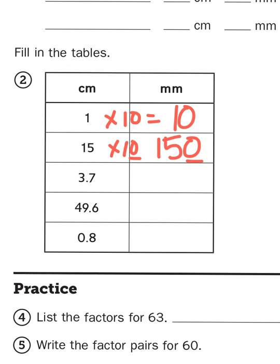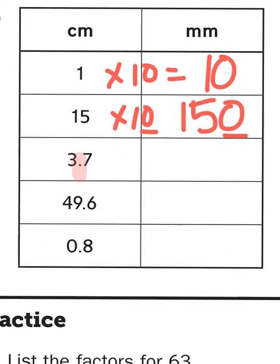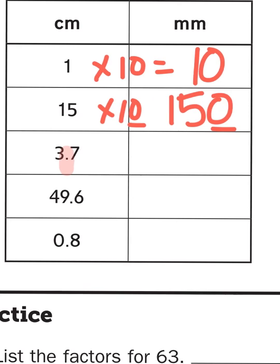Any number multiplied by 10 is just going to add a zero behind it. Unless you're dealing with decimal points. If you're dealing with decimal points, something different happens. So 3.7 centimeters, written like this.